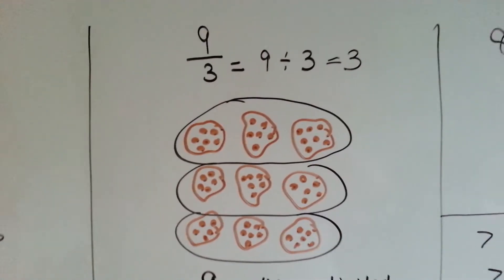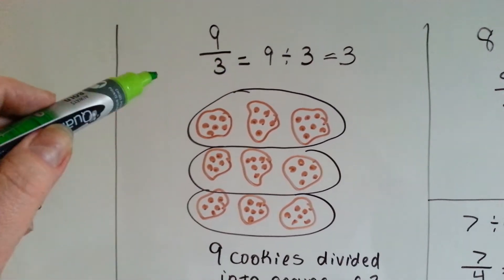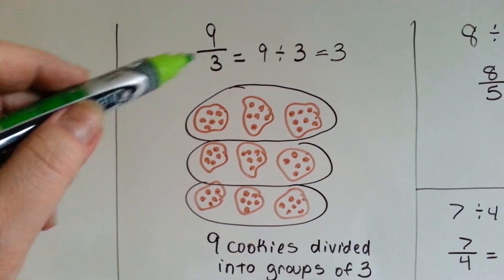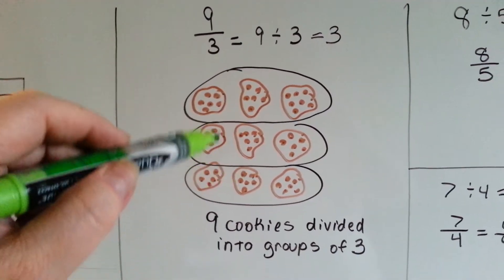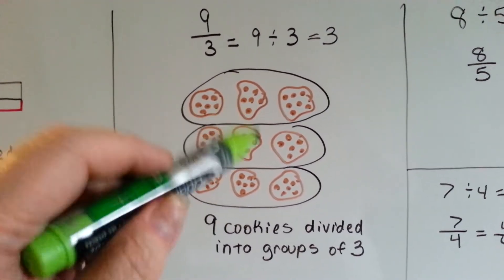When we have nine thirds, it's like saying nine divided by three. We have nine cookies divided into groups of three. There's three in each group.